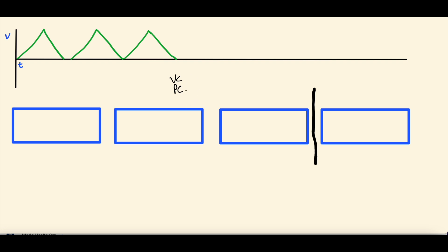In these two different modes of ventilation, the difference is what you set. In volume control, you set a tidal volume. In pressure control, you set an inspiratory pressure. The thing you're not setting in that mode is the uncontrolled variable. In volume control, you're controlling the tidal volume — the cc's of air the ventilator pushes into the lungs with each breath. But the uncontrolled variable that results is the pressure — the inspiratory peak pressure. In pressure control, you set the pressure, and the uncontrolled variable is the tidal volume.